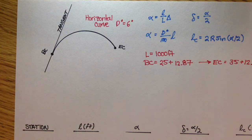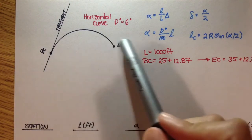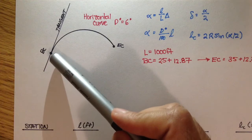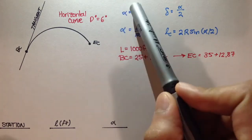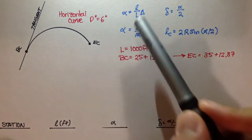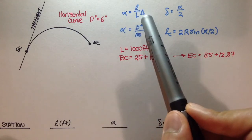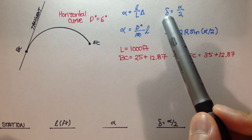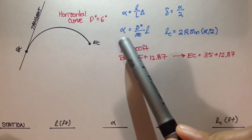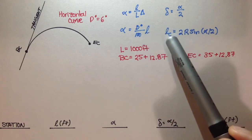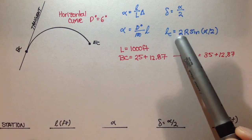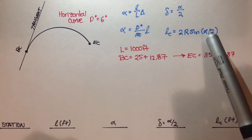Let's take what we learned about deflection angles and chord lengths to do a quick example. Here we have a simple horizontal curve with BC and EC marked. The tangent line at BC is drawn, and we have all four equations from the last video: angle alpha equals little l over L times delta; deflection angle equals alpha over 2; alpha equals degree of curvature over 100 feet times little l; and chord length lc equals 2 times radius times sine of the deflection angle.